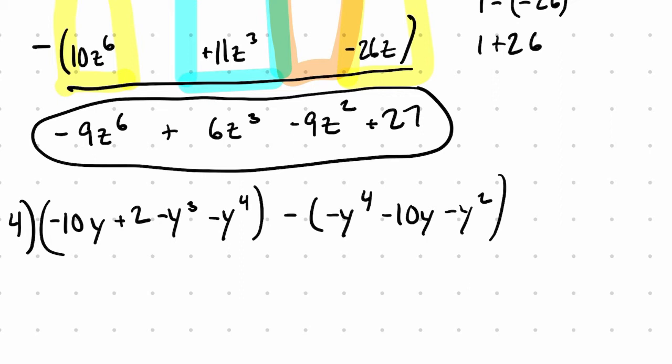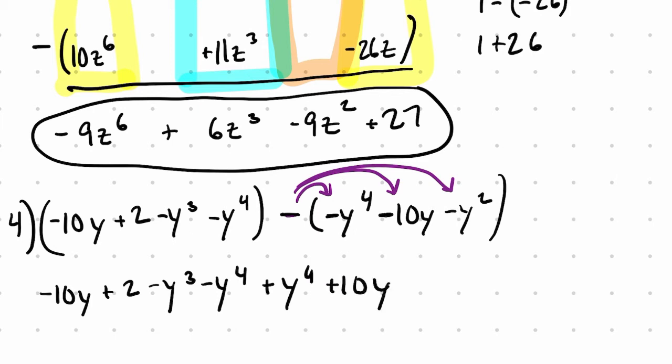So the other common approach, as I showed in the first video, is to first distribute subtraction to each term in here. You could rewrite the first polynomial. You do not need those parentheses at all. And then you subtract negative y to the fourth. It's really plus y to the fourth. You subtract negative 10y. It's really plus 10y. And finally, you subtract negative y squared. It's really plus y squared.